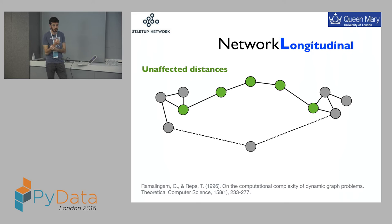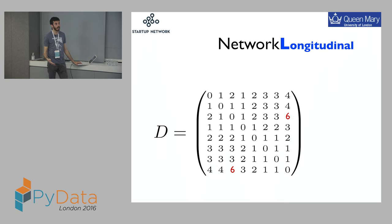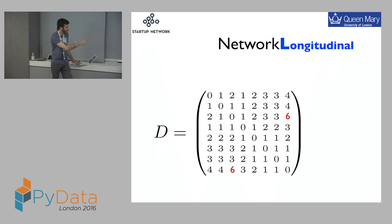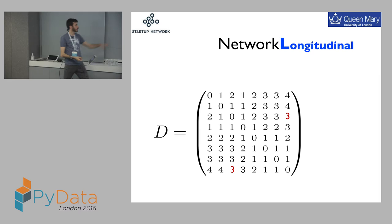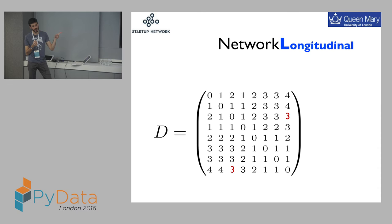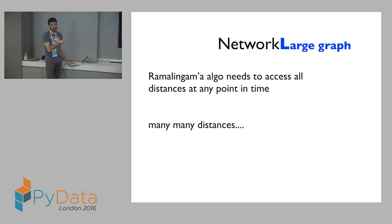This is the geodesic matrix or distance matrix. The number 6, for instance, is the distance between the two red nodes. At time T+1, number 6 becomes 3. What the algorithm does is just change those numbers that need to be changed, while all the others remain the same. The algorithm takes as input this matrix, the new edge, and tries to minimize the computation. But it needs to access all distances at any point in time, and in large graphs you have many, many distances — scaled as n² because there are n times n nodes.